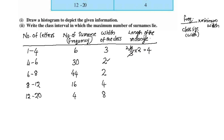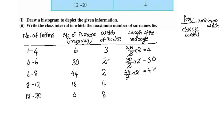The adjusted frequency (length of rectangle) is 4. For 4 to 6: frequency 30, width 2, minimum class size 2 — the 2s cancel, giving 30. For 6 to 8: frequency 44, width 2, minimum 2 — giving 44. For 8 to 12: frequency 16, width 4, minimum 2 — 16 divided by 4 multiplied by 2 equals 8. For 12 to 20: frequency 4, width 8, minimum 2 — giving 1.